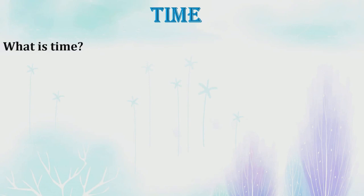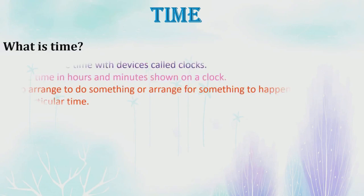Before we start our chapter, we need to understand first what is time. We measure time with devices called clocks. The time in hours and minutes shown on a clock helps us arrange to do something or arrange for something to happen at a particular time.